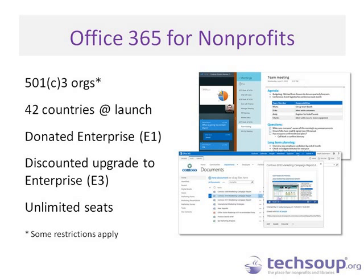We think the donated Enterprise E1 will probably be just fine for most organizations. But for those with very specific needs, there is that reduced cost to bump up to E3. With SkyDrive Pro, which comes with this, you get 25 GB of storage for free, with options to upgrade to about 100 GB for a little extra cost. As well as your email — I believe you get about 50 GB of storage in there as well. So there should be plenty of storage to handle most of the email you'll need.